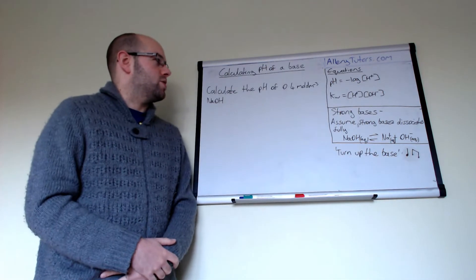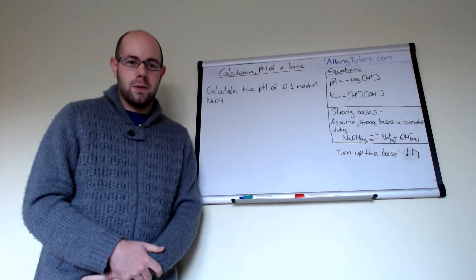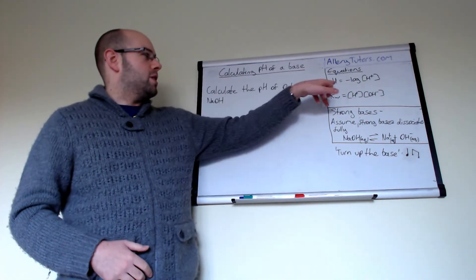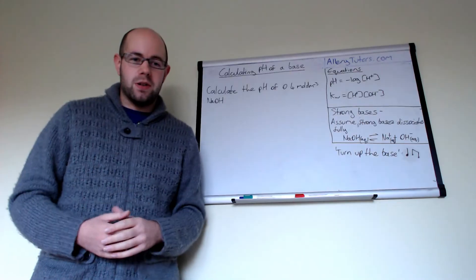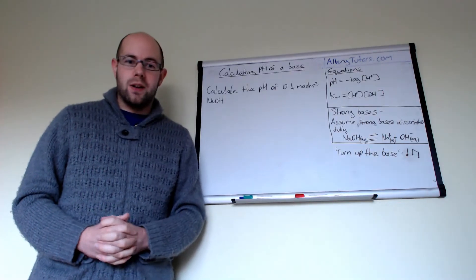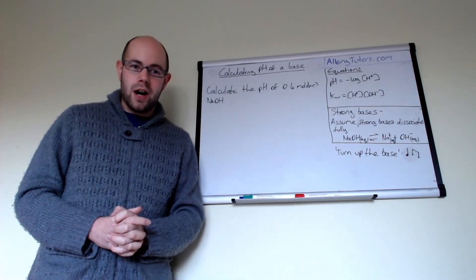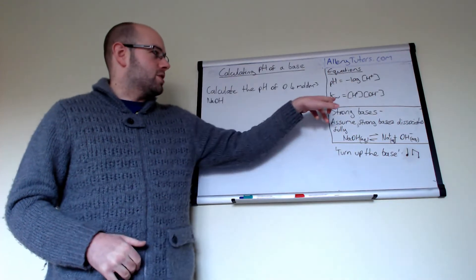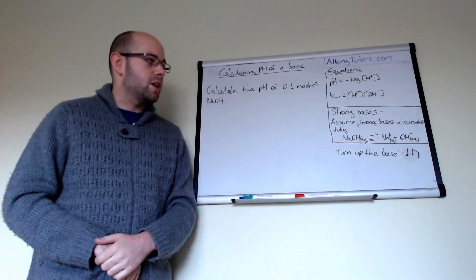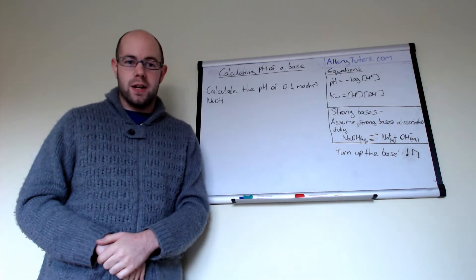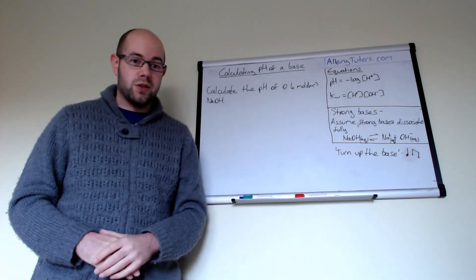We've got our two equations here that we're interested in to calculate the pH of a base. We have the pH equation, the standard pH equation, which is pH equals minus log of H plus and we also have our ionic product of water, which is Kw equals H plus multiplied by OH minus. We're going to use both of these equations to work out our pH.